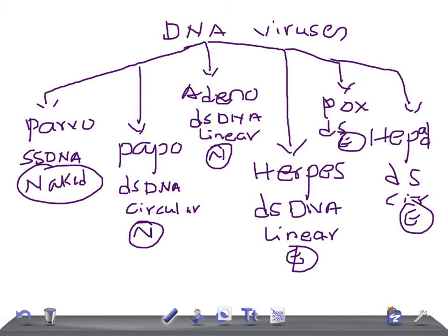In the Parvovirus family, the important virus is B19, which causes aplastic anemia — severe anemia — especially in school-going children or pregnant women. In Papovavirus we have Papilloma and Polyoma. Adenovirus is adenovirus. Herpes includes HSV, Varicella-Zoster, Epstein-Barr virus, and Cytomegalovirus. In Pox: Variola, Vaccinia, and Molluscum contagiosum. In Hepadna we have Hepatitis B.